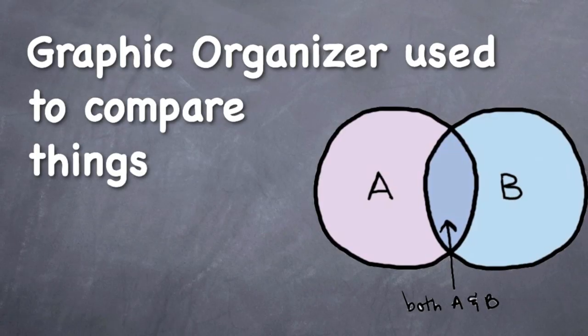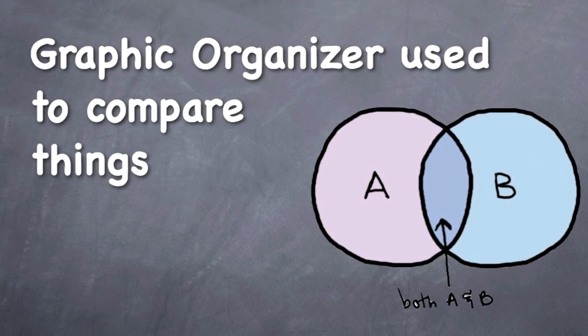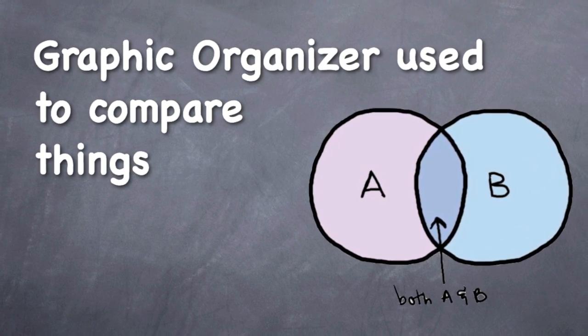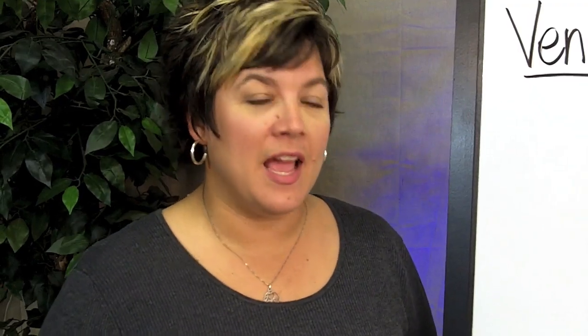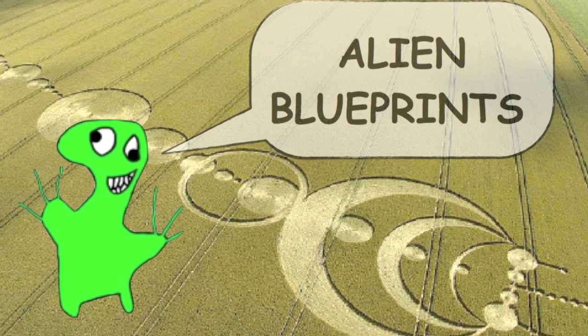Is it A, a graphic organizer to help compare things? Is it B, blueprints from aliens about crop circles?